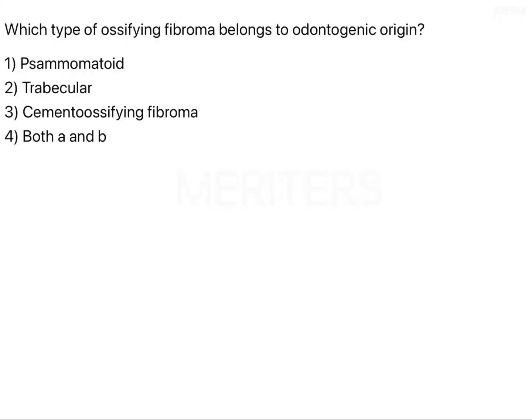Which type of ossifying fibroma belongs to odontogenic origin? The options are: A) psammomatoid, B) trabecular, C) cemento-ossifying fibroma, D) both A and B.